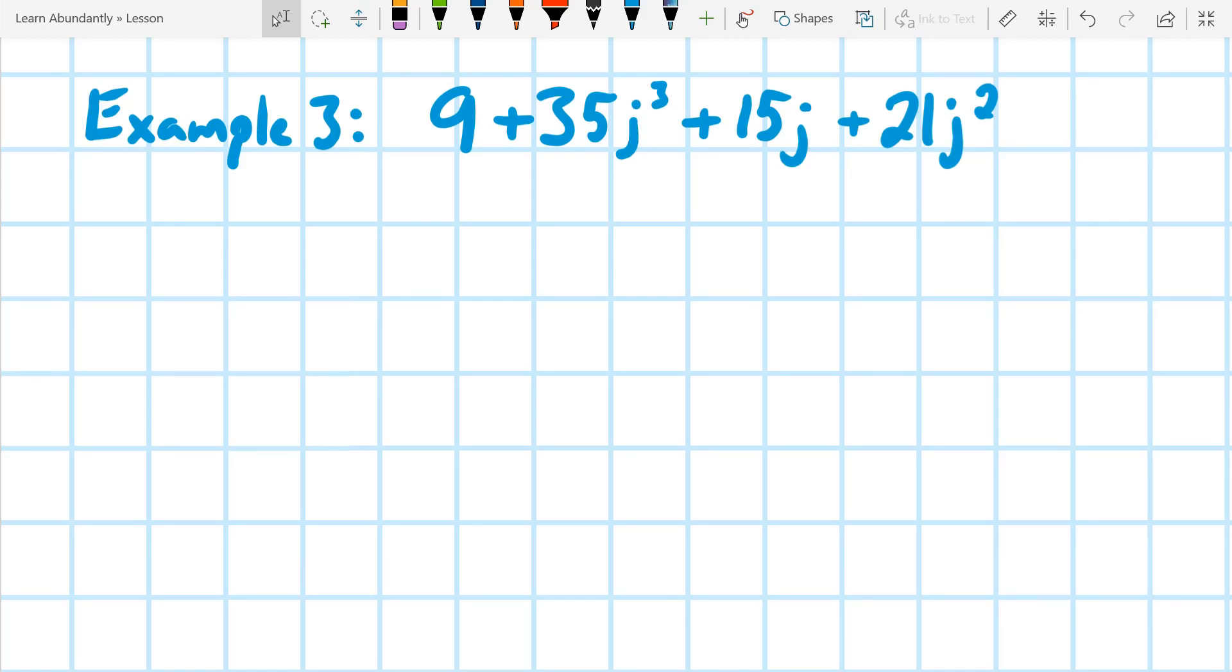So if you look at this one, that's the j cubed, and then the j squared is over here. So when it's out of order, it makes it much more difficult to pull out the pairs. So what we're going to do is rewrite it in order.